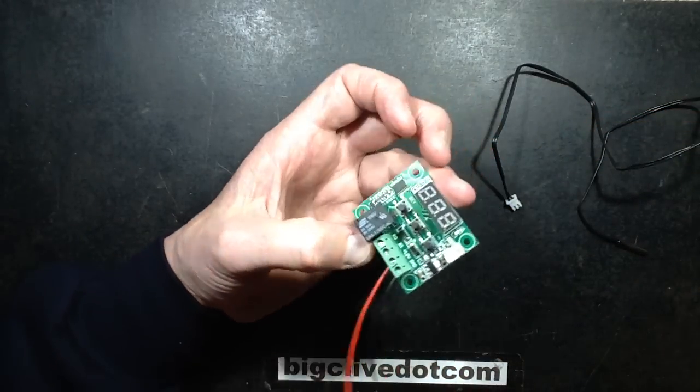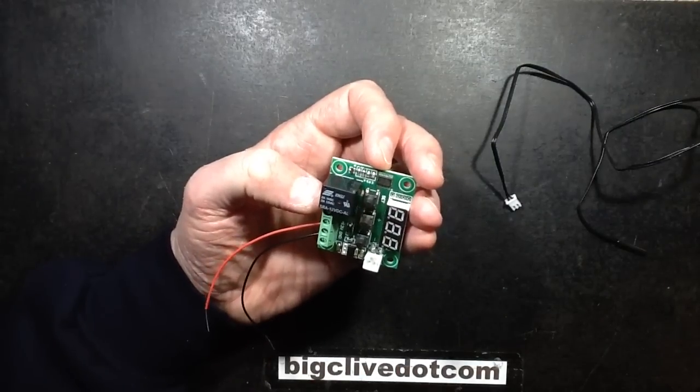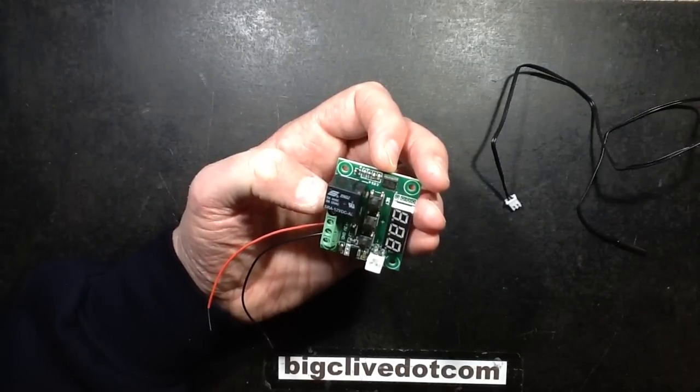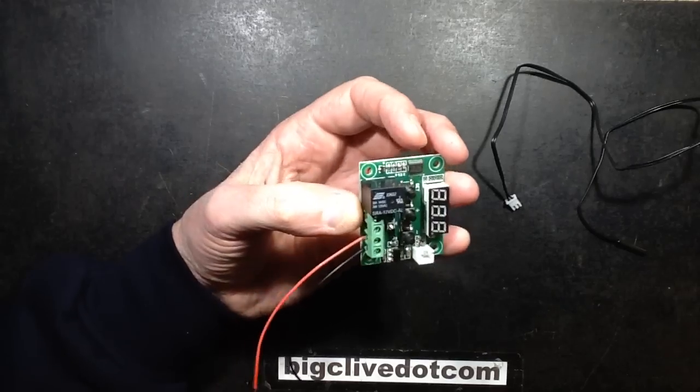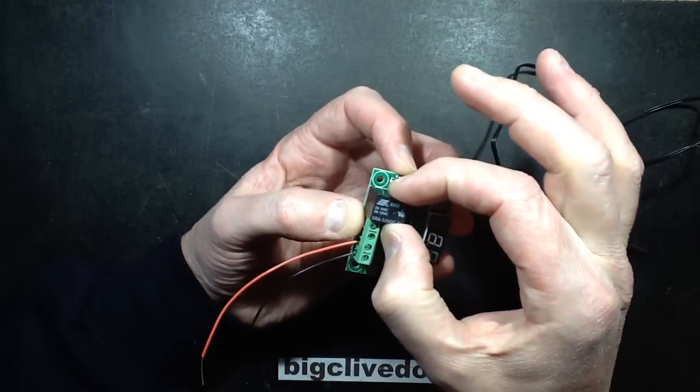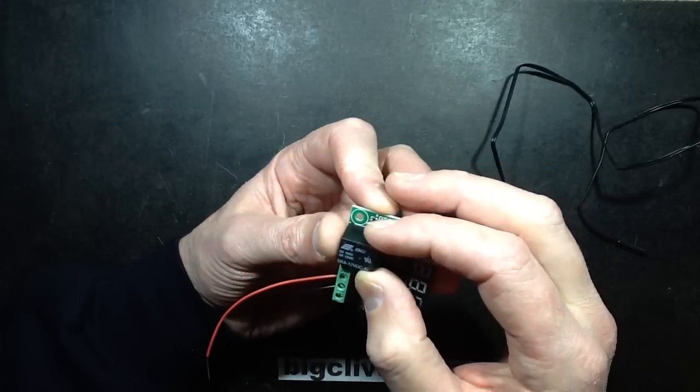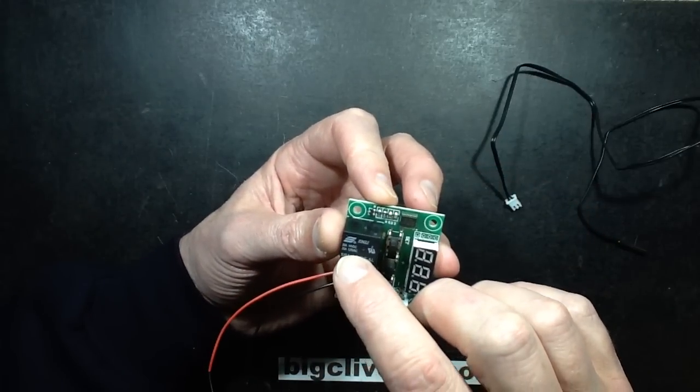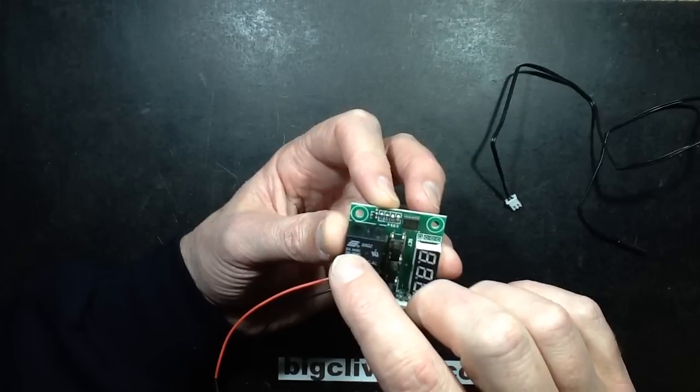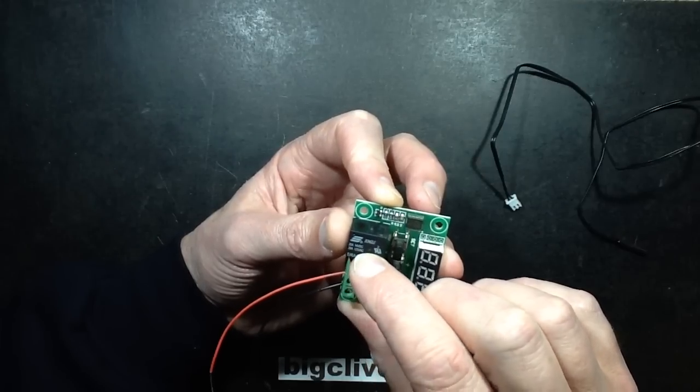The relay is rated at 20 amps, 125 volts AC. I'm not actually convinced a relay of that size is going to handle 20 amps comfortably. And it also says if you're DC, then it's rated for 20 amps at 14 volts DC.